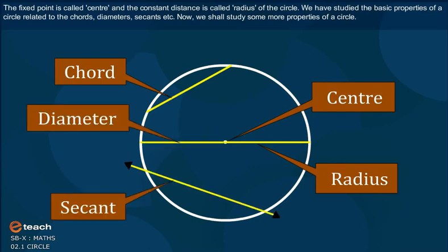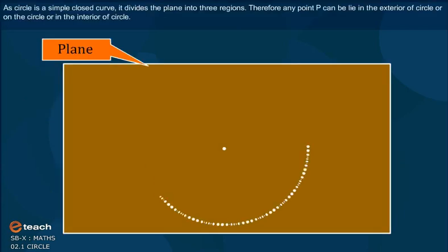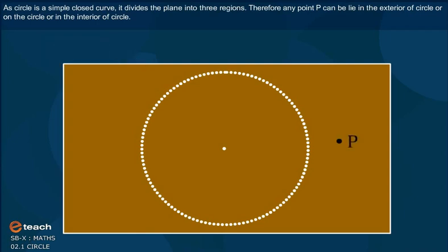Now we shall study some more properties of a circle. As a circle is a simple closed curve, it divides the plane into three regions. Therefore, any point P can be lying in the exterior of the circle, on the circle, or in the interior of the circle.